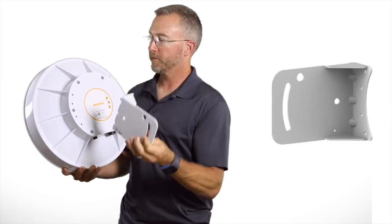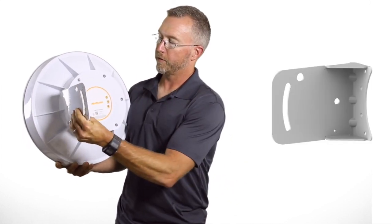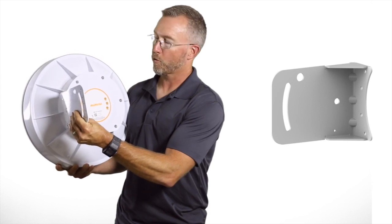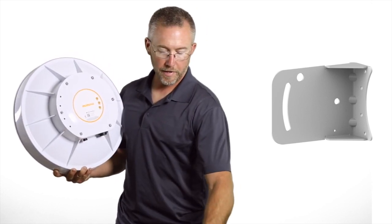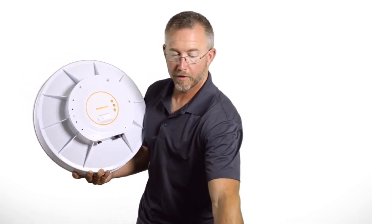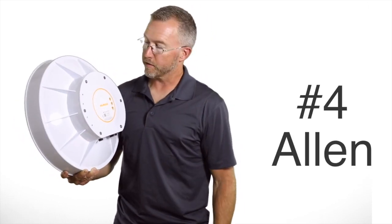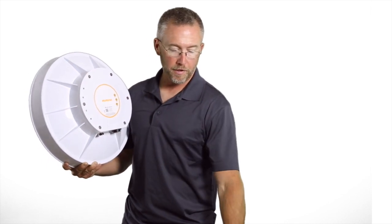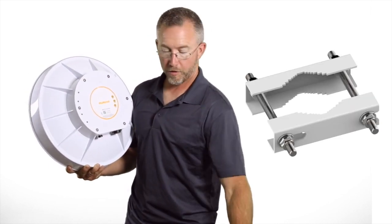Here's an example of a bracket making the attachment here to the side with four screws that are easy to manipulate using an Allen tool, number four Allen, and then attaching the rest of the bracket hardware to the unit.